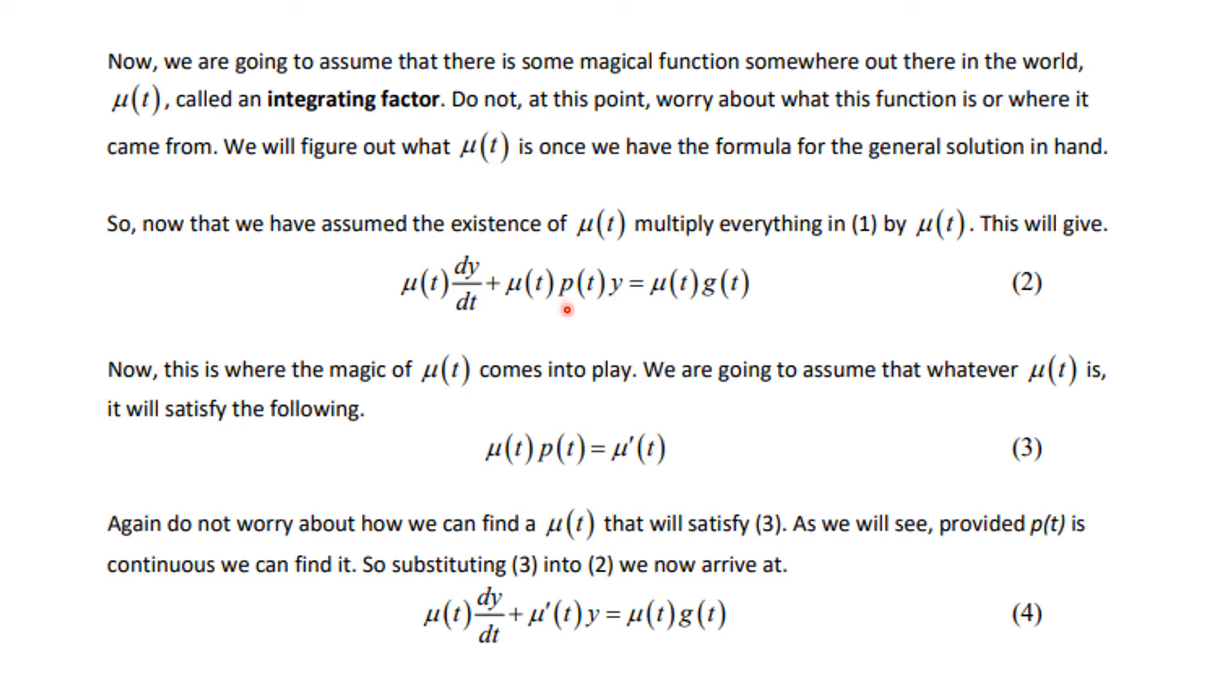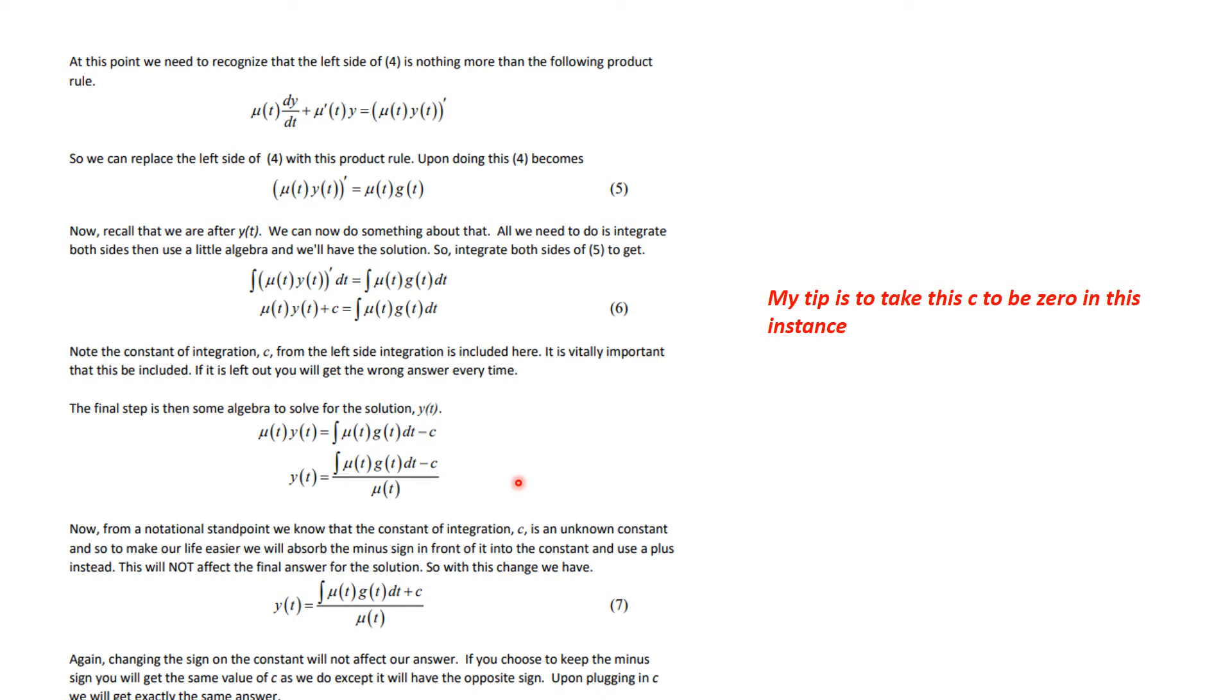Now, the nice thing about that is that means that here I will have mu of t times dy dt plus mu prime of t times y. This is really the derivative of mu of t times y by the product rule. That's key to what we're doing. So when we have that, we can integrate both sides. So we have the derivative of mu of t y of t is equal to mu of t times g of t.